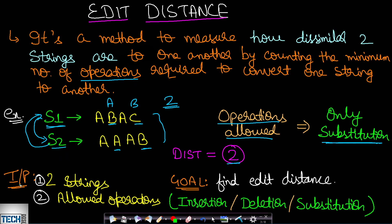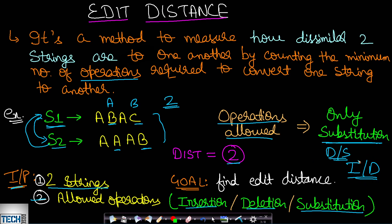In these types of problems, we will be given two strings as input and certain allowed operations. The popular operations are insertion, deletion, and substitution. We can be given all three operations or any combination — for example, insertion and deletion only but not substitution, or deletion and substitution but not insertion. Our goal is to find the edit distance to convert S1 to S2, or S2 to S1 — both are the same problem.